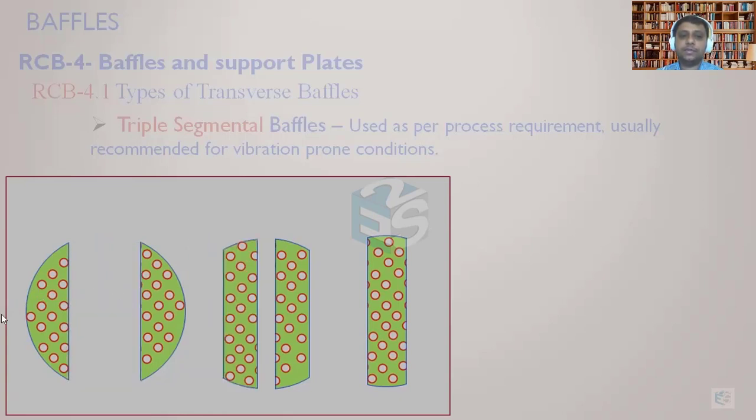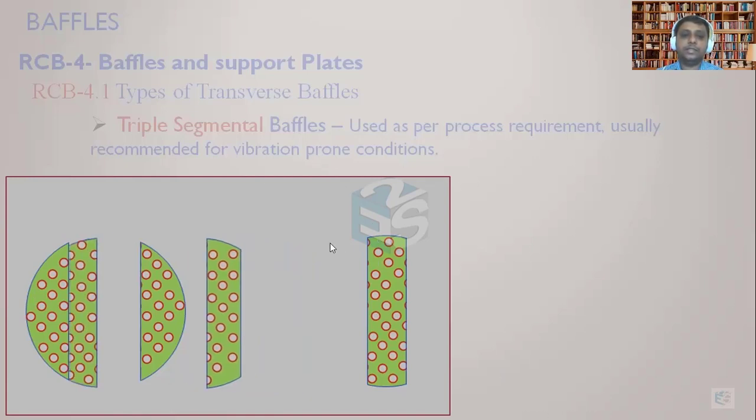This is the first one from where the flow is coming. This will be the second one and this would be the third one. So you can see how the arrangement would be done.